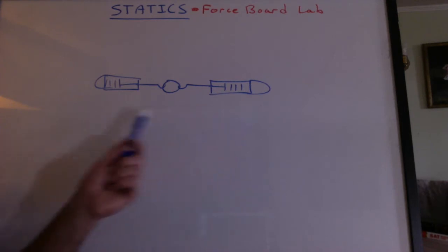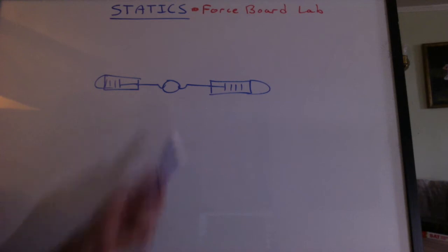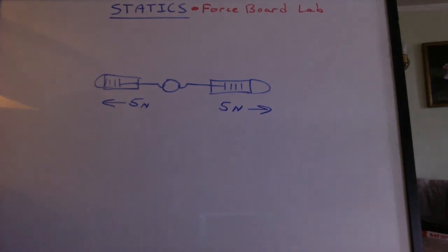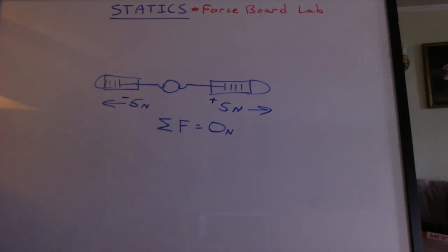You pulled one way, you pulled the other way on the ring. Let's say you had 5 newtons going to the right and 5 newtons going to the left. What would they add up to? Some kids actually said 10 newtons. Yeah, but they have a direction. These are vectors. The sum of these forces is 0 newtons because one is positive and the other is negative.